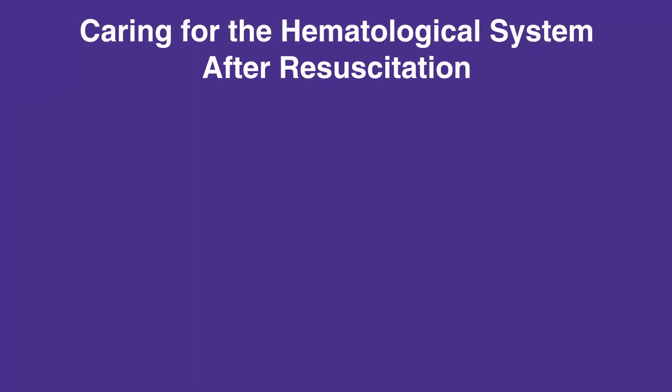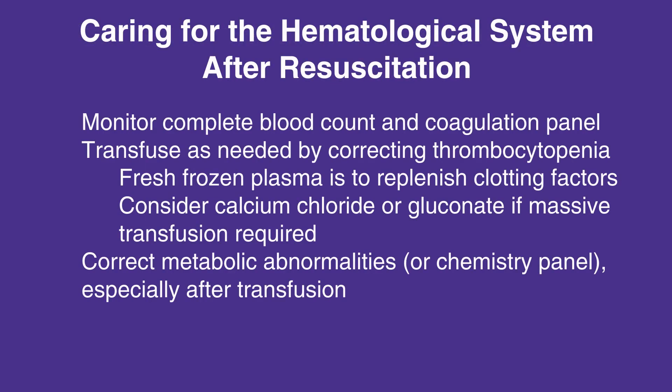When caring for the hematological system after resuscitation, follow this checklist. Monitor complete blood count and coagulation panel. Transfuse as needed by correcting thrombocytopenia. Fresh frozen plasma is to replenish clotting factors. Consider calcium chloride or gluconate if massive transfusion is required. Correct metabolic abnormalities or chemistry panel, especially after transfusion.